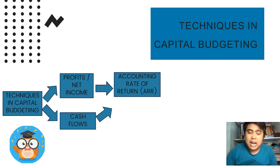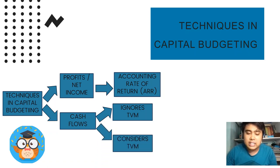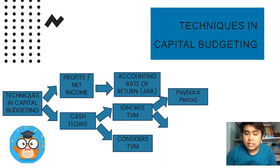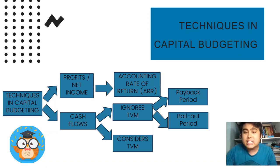For the technique using cash flow, we will divide it further into two. There are techniques that use cash flow but ignore time value of money, and techniques that use cash flow and also consider time value of money. For those that ignore time value of money, we have payback period and bailout period. These three — ARR, payback, and bailout — are considered non-discounted techniques, because they all ignore time value of money.